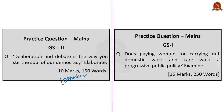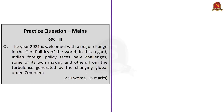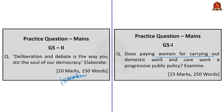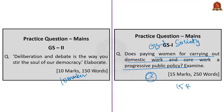Now let us move on to the next questions. 'Deliberation and debate is the way you stir the soul of a democracy — elaborate.' This is a 10 marker: give 10 points with a proper introduction, body and conclusion. Next: 'This year 2021 is welcomed with a major change in the geopolitics of the world. In this regard, India's foreign policy faces new challenges, some of its own making and others from the turbulence generated by the changing global order. Comment.' This is a 15 marker — give 15 points with a proper body. Finally: 'Does paying women for carrying out domestic work and care work constitute a progressive public policy — examine?' This question can be asked in GS2 society part, so try to generate as many points as possible and write it as a 15 marker.